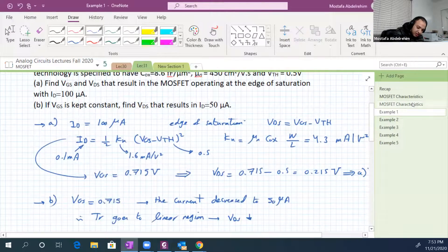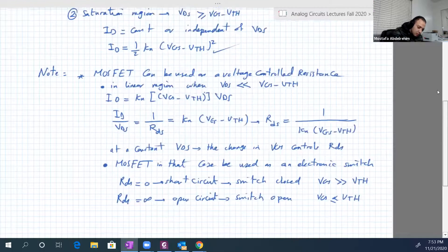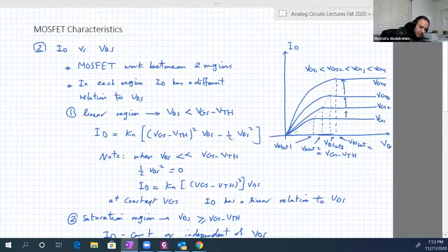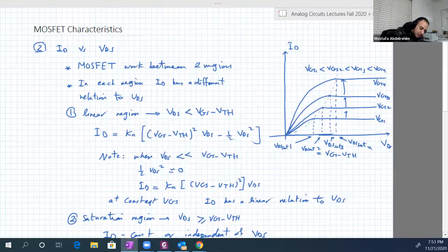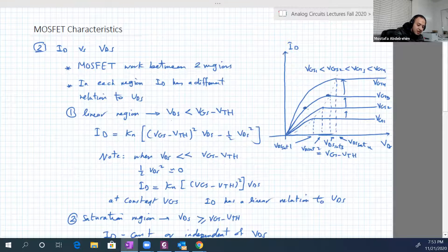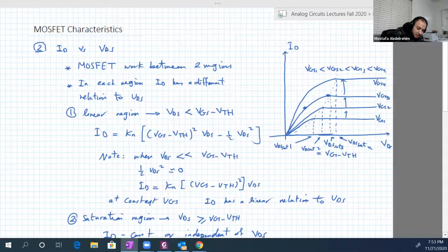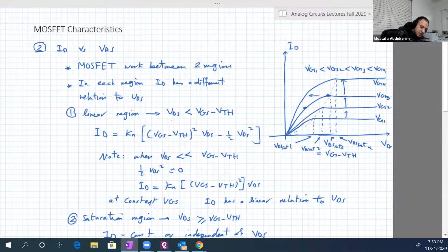If we go back to the characteristics, we were at the edge with 100 micro, then it's reduced to 50. So for example, it was here, then it goes here. That means we are in the linear region, so VDS should decrease.